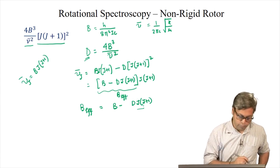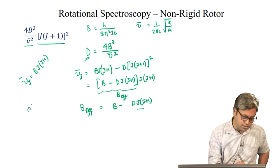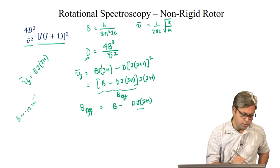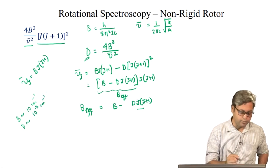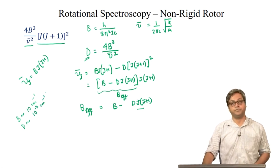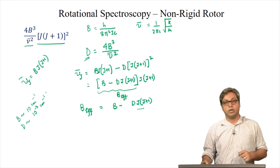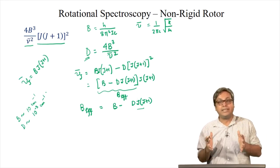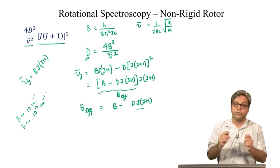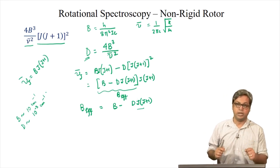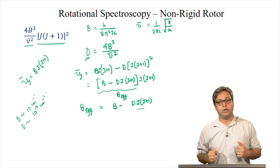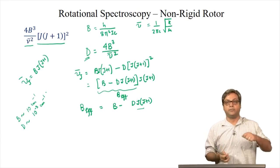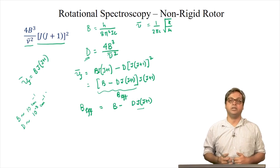Since D is significantly less than B, the difference between the rigid and non-rigid rotor treatments is expected to show up only at high values of J.